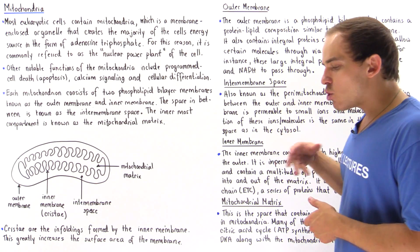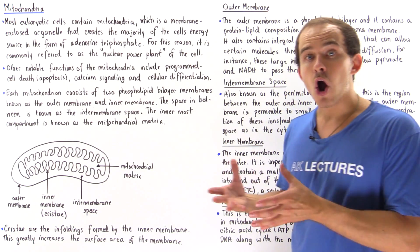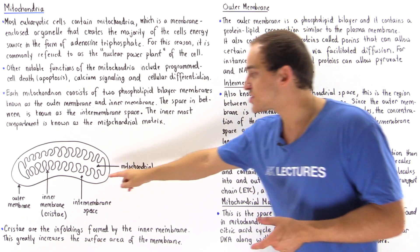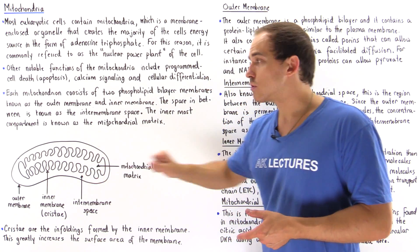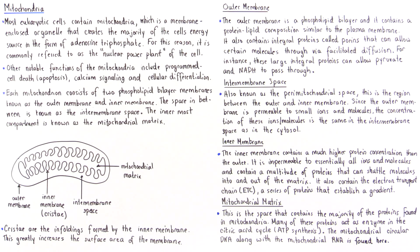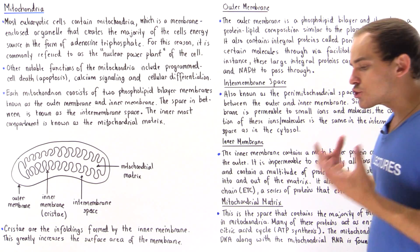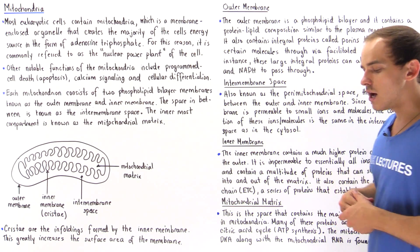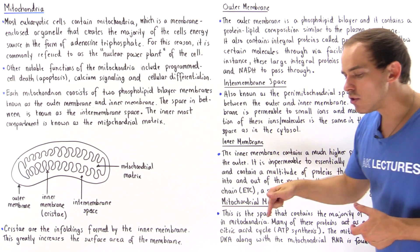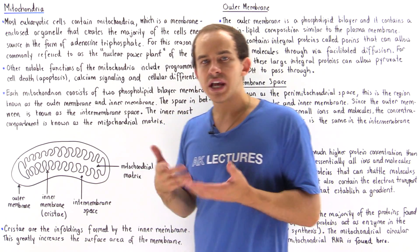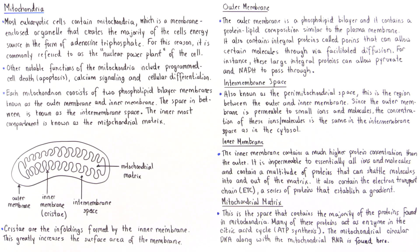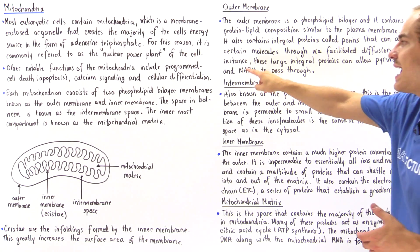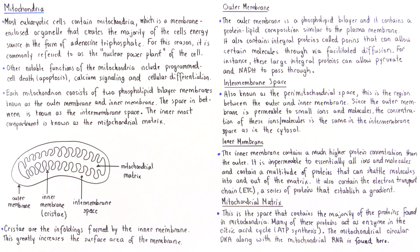The outer membrane also contains special large integral proteins that span the entire outer membrane known as porins. These porins allow certain small molecules to pass through via facilitated diffusion — down the electrochemical gradient without using any energy. For instance, these proteins allow pyruvate and NADH to pass through the outer membrane.